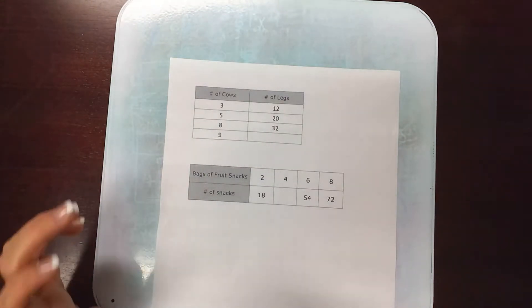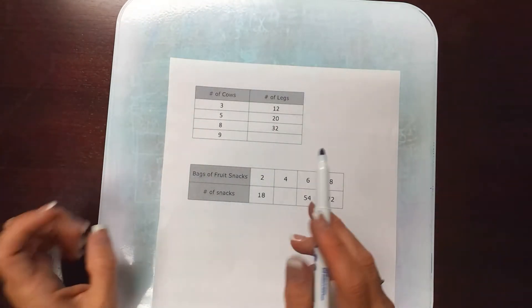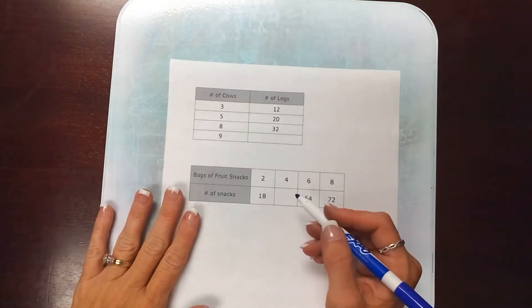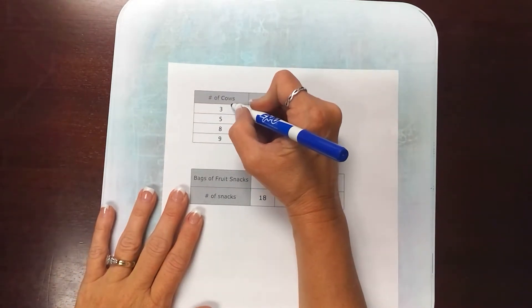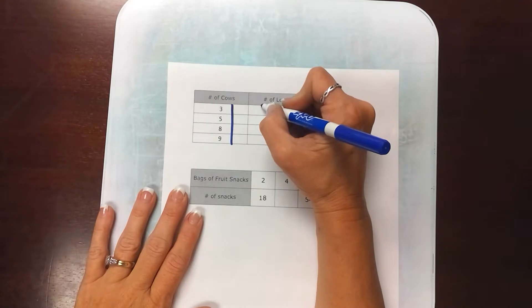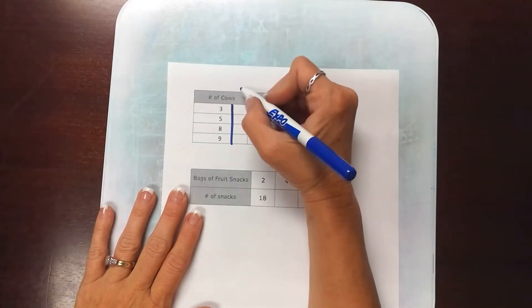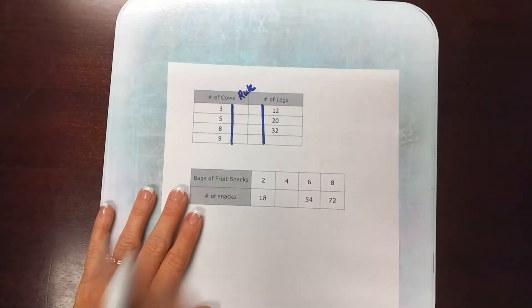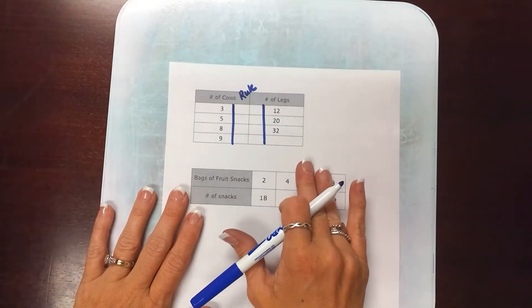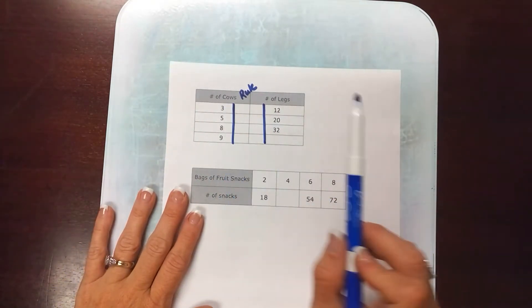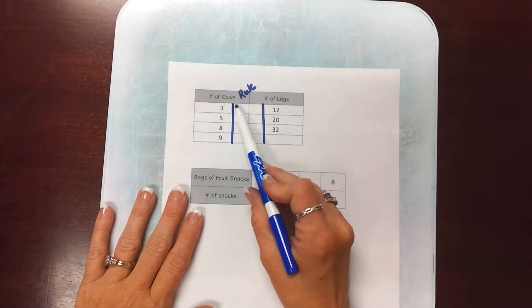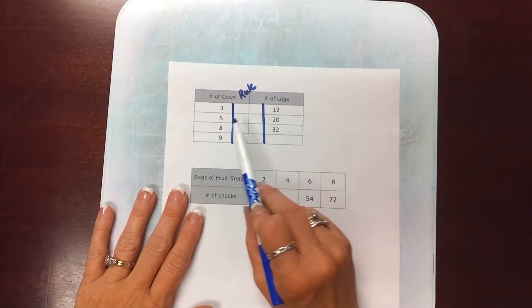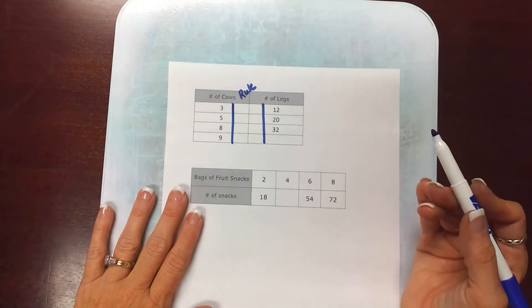So let's talk about the strategy for a table. We always talk about the magic column and what the magic column is - we know there's a rule, something that's happening between the input and the output. We always tell students this rule has to work for every single input for it to be the correct rule.